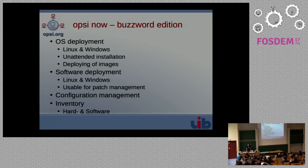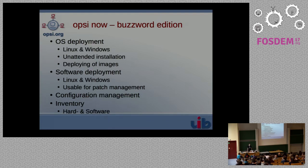If there's software, we want to configure it, so Opsi can also be used for the configuration management aspect. To make everything complete, we also have hardware and software inventory so we know what hardware and software is installed on our clients. The hardware inventory is important mostly for the Windows side because if you want to deploy an operating system, you usually need drivers — and the easiest way to deploy the right drivers is to know what hardware is inside your computer.